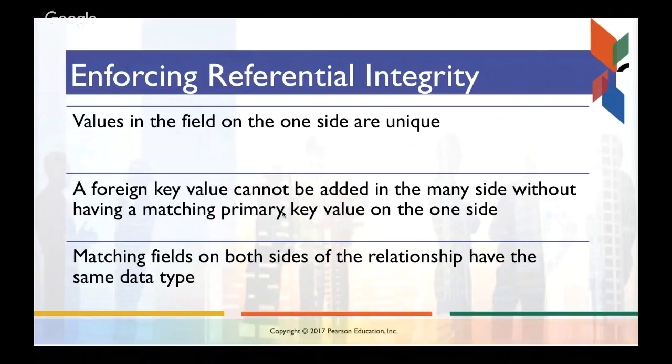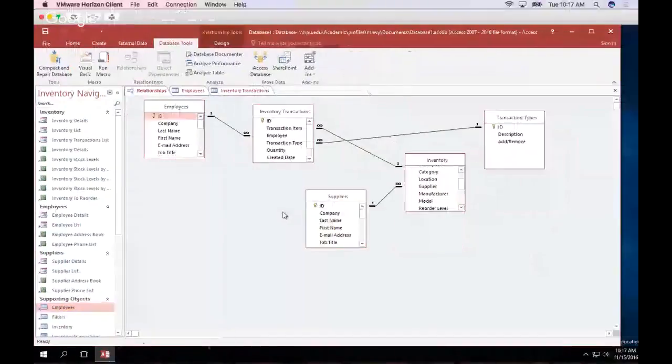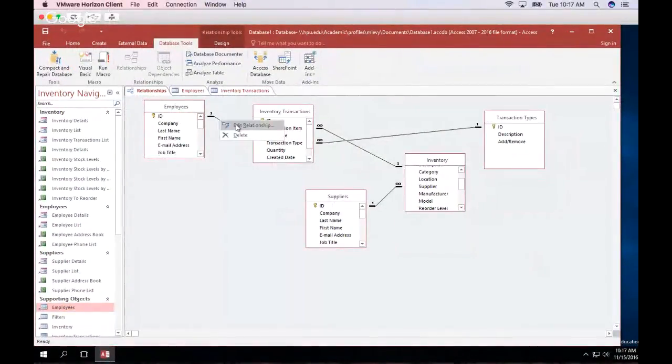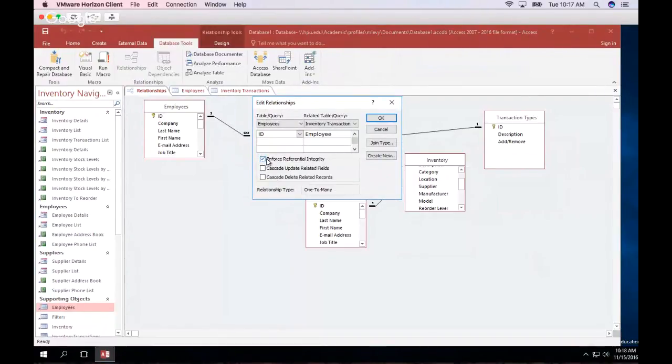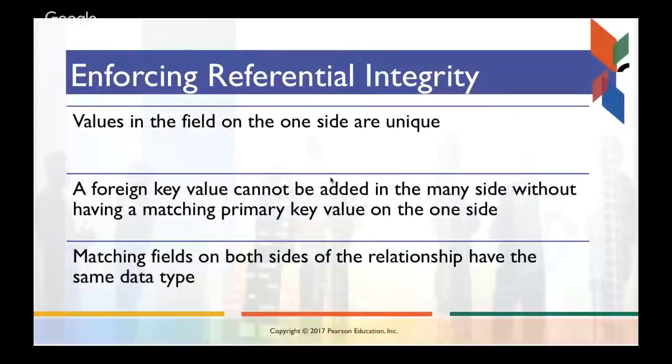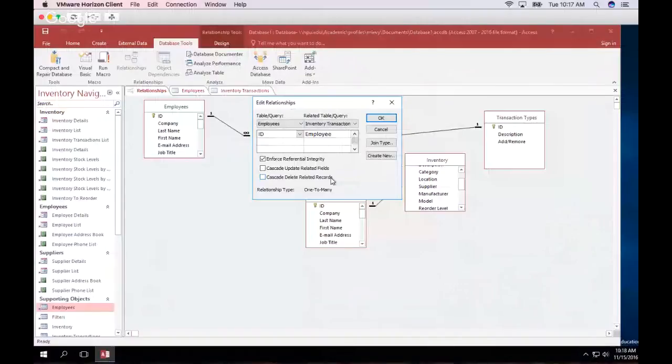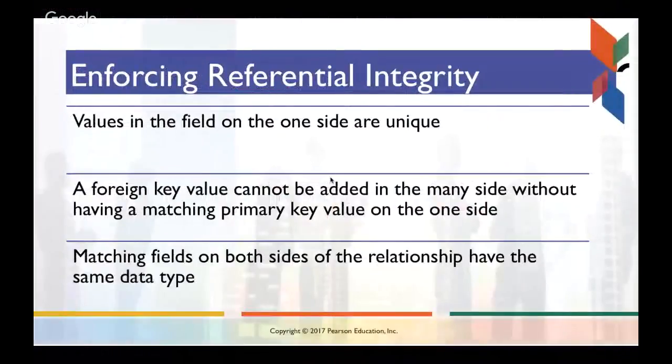Okay, let's talk a little bit more about enforcing referential integrity, which when we created that relationship back here, notice that I actually had the option, or I checked the option, to enforce referential integrity. Meaning that when I am creating a database entry in inventory transactions and I add an employee number, it has to refer to an employee ID. So enforcing referential integrity, where values in the field on the one side are unique, but the foreign key value cannot be added to the many side without having a matching primary key value on the other side, and matching fields on both sides of the relationships have to also be the same data type.